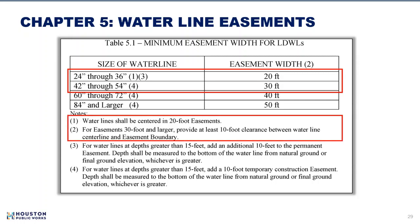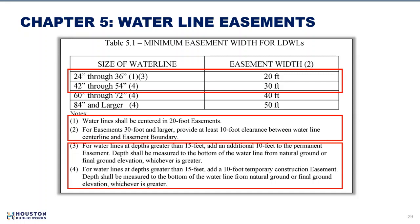Notes 1 and 2 relate to the location of the large diameter water line within the easement. Note 1 requires the water line centered within 20-foot easements. Note 2 requires 10-foot clearance between the center line of the large diameter water line and the easement boundary. Notes 3 and 4 relate to additional permanent or temporary construction easements for cases where the large diameter water line depth is greater than 15 feet as measured to the bottom of the water line.